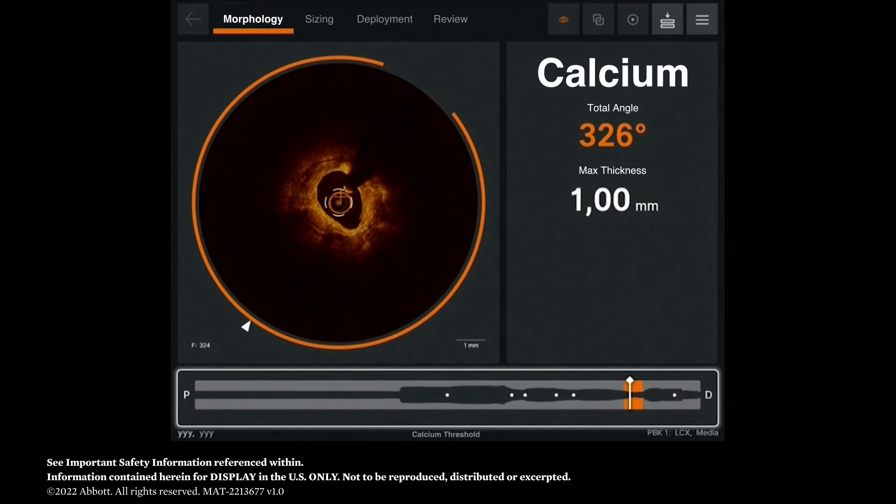126 degrees of calcium, it's a huge calcification, concentric, almost circular, almost concentric, and it's also very thick. The profile, you can see it highlighted in orange as well, is that correct?